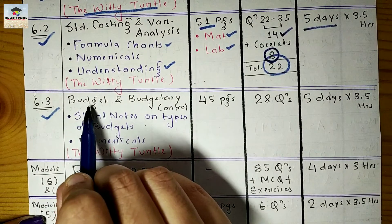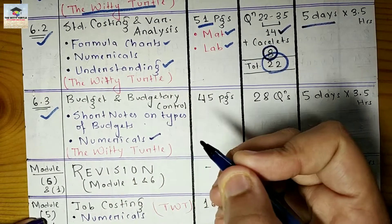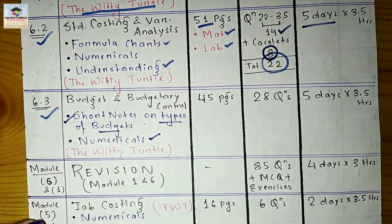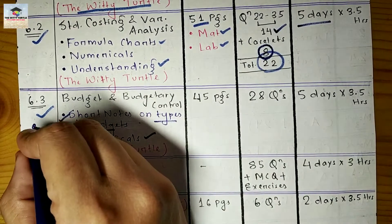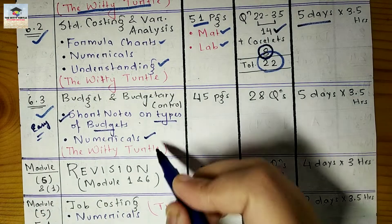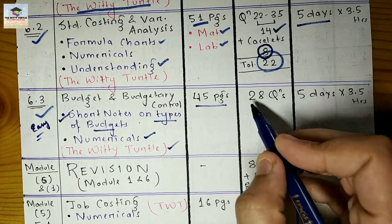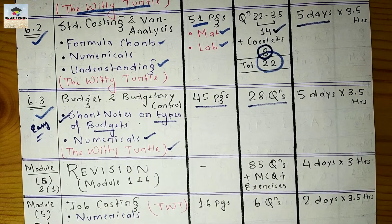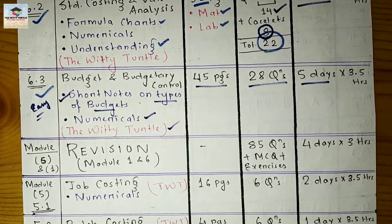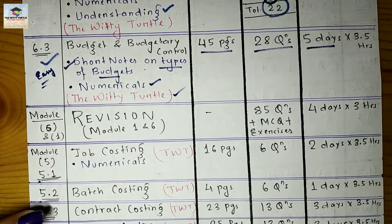The last chapter of Module 6 is Budget and Budgetary Control. Prepare numericals and make short notes on types of budgets — these short notes are very important from an exam point of view. It's an easy chapter; once you understand it, all questions are easy. Find it on The Witty Turtle. It has 45 pages and 28 questions — the more you practice, the more beneficial it will be. It takes five days.